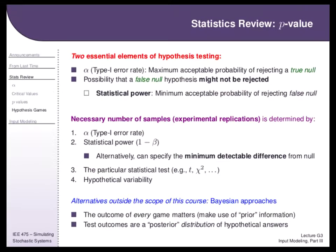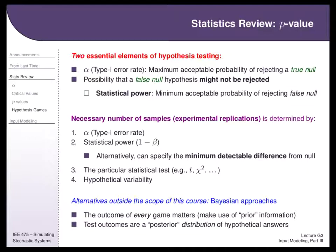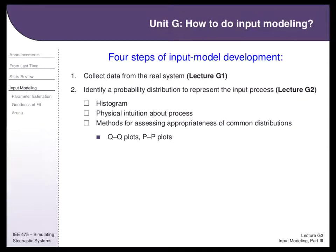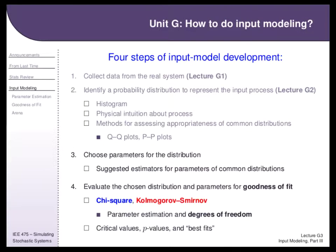On Tuesday we'll go into how to actually calculate this. Given your alpha, your beta, and your particular test and how much variance is in your data, only then can you determine how many simulation replications you need to detect the difference you think is meaningful. That's where we're going. You can take more stats and learn alternatives like Bayesian statistics, but that's outside the scope of this course. So where we've gone so far: we've done QQ plots, PP plots, the fat pencil test — and now we want to make it more quantitative.